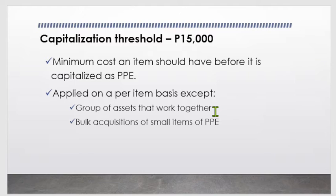Another exception is bulk acquisitions of small items of PPE such as library books, computer peripherals, and small items of equipment. If the aggregate cost reaches ₱15,000 and above, the items can be considered as PPE. So the per item basis rule has two exceptions: group of assets that work together, and bulk acquisitions where the aggregate cost meets the threshold.